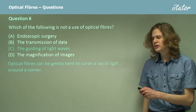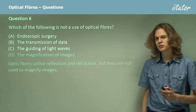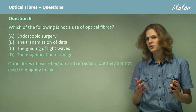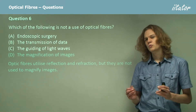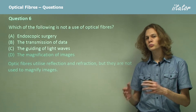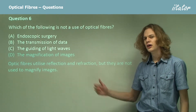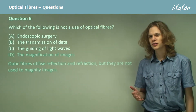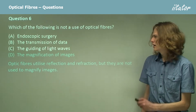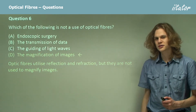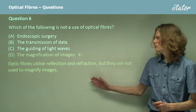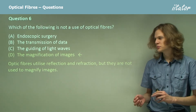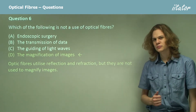Our last option is D: the magnification of images. When we covered lenses and mirrors, we found forms of each that could be used to magnify an image. Optical fibers, however, aren't used for this purpose, and so D is the correct answer. Images are magnified by lenses or by mirrors, not by optical fibers.